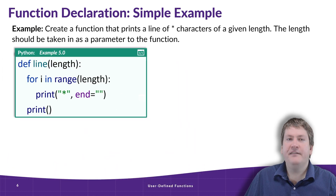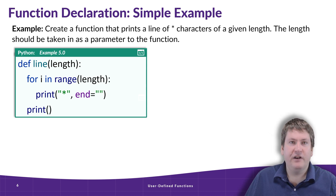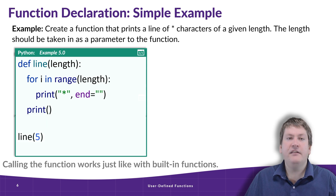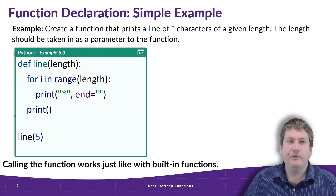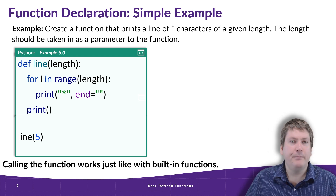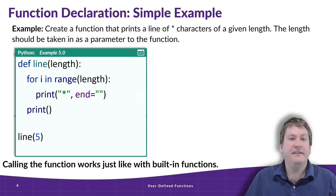Let's see how we would actually run this function. If we just wrote this code in a Python file and hit run, nothing would happen, because this just sets up our function — it's like assigning a value to a variable that doesn't do anything on its own. To actually run this function, we have to call the function. This is just like we've called built-in functions we've used before, like print, input, int, pow — all of those functions already built into Python are called the same way. In this case, we're calling the function 'line' that we've created with the value five.